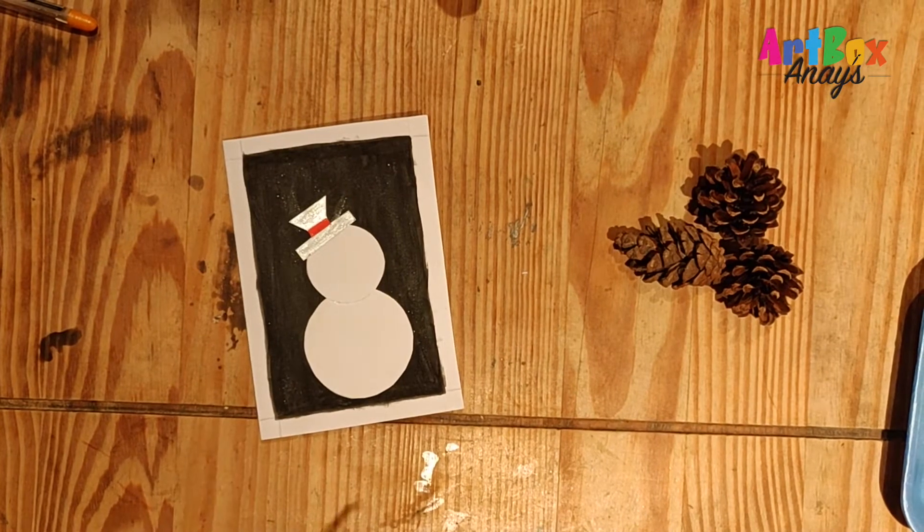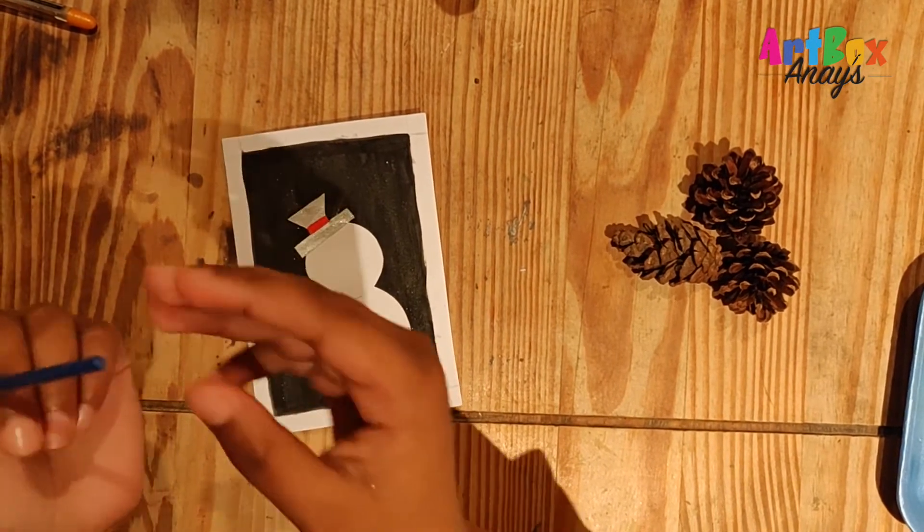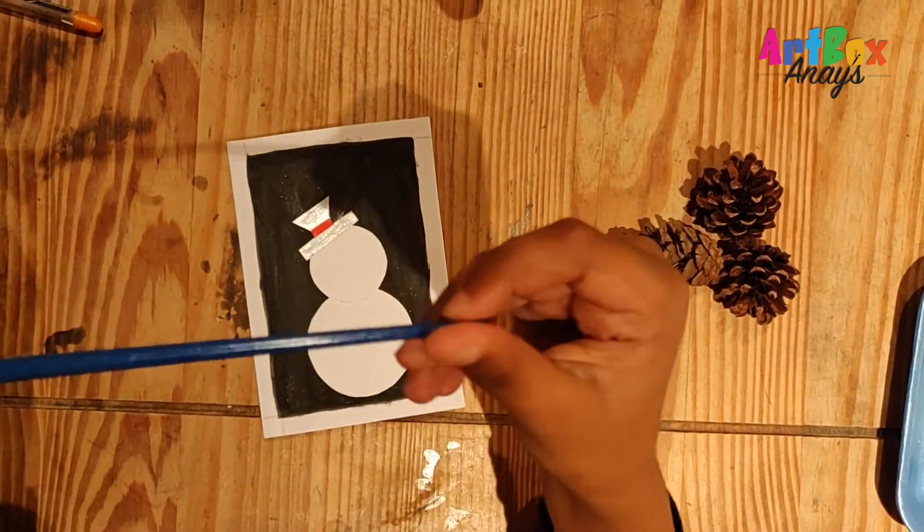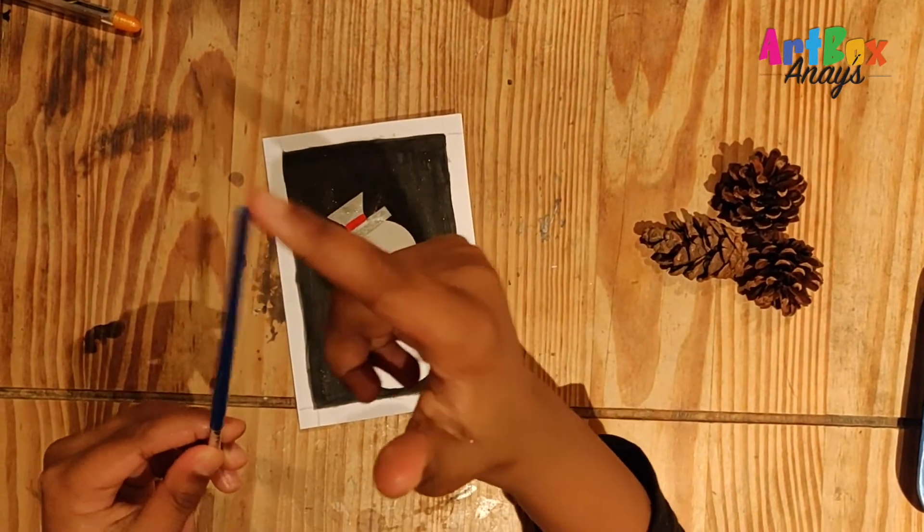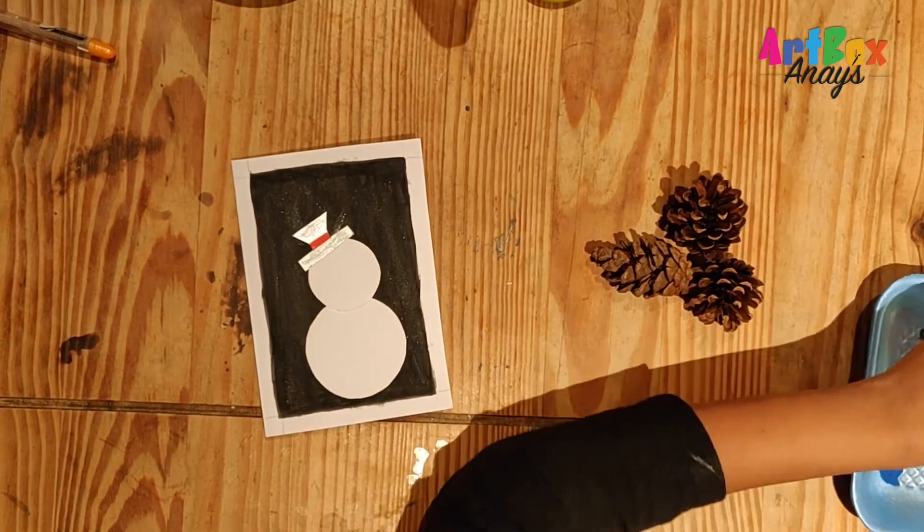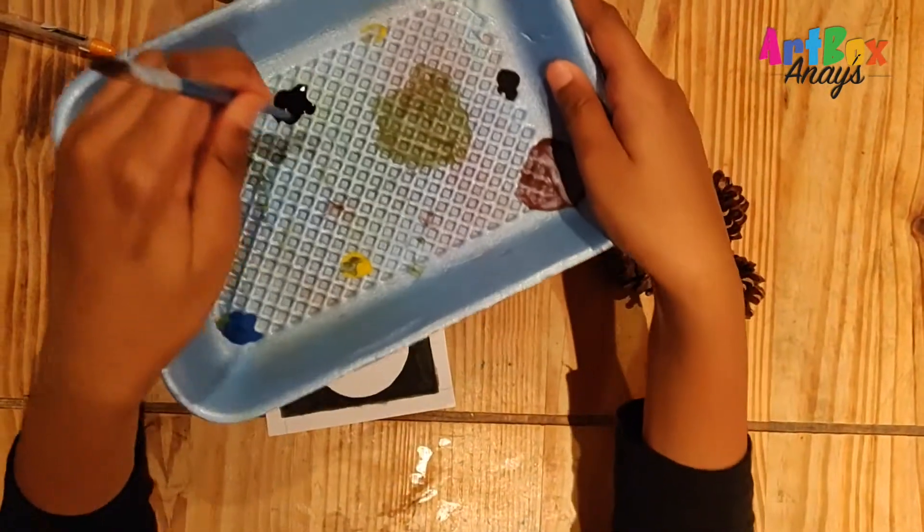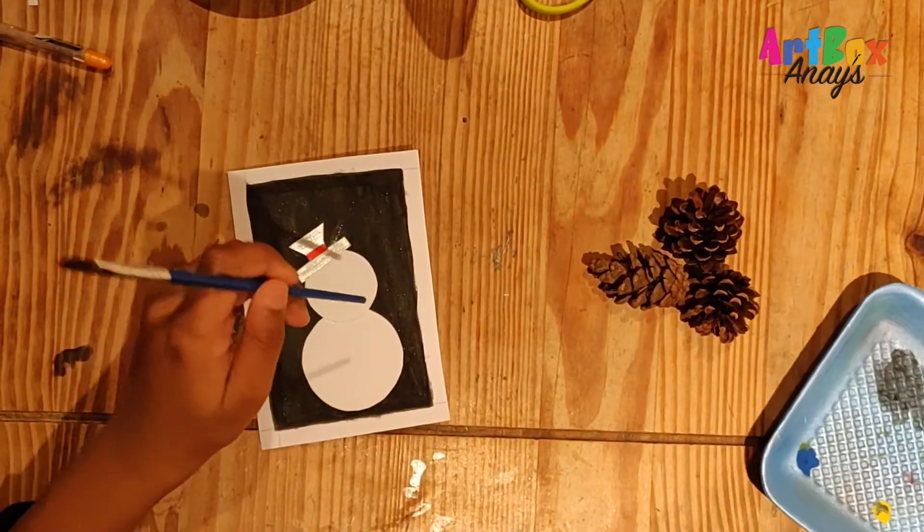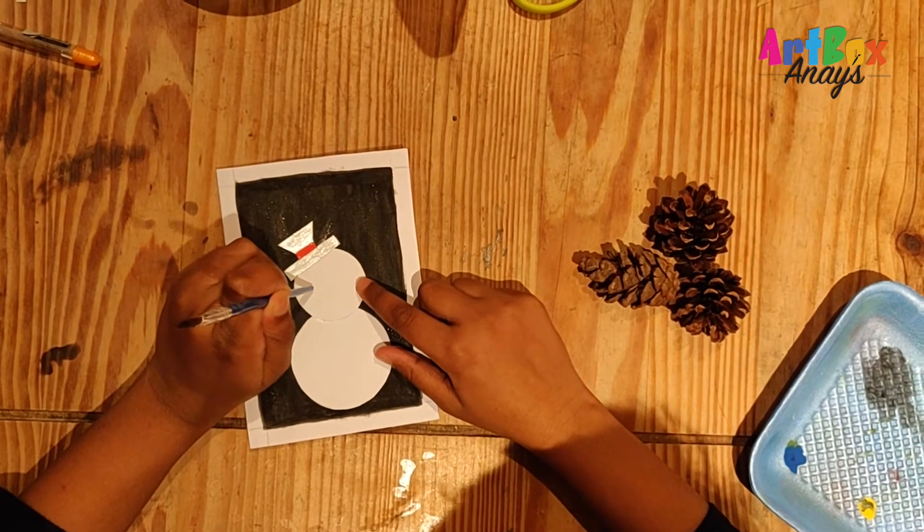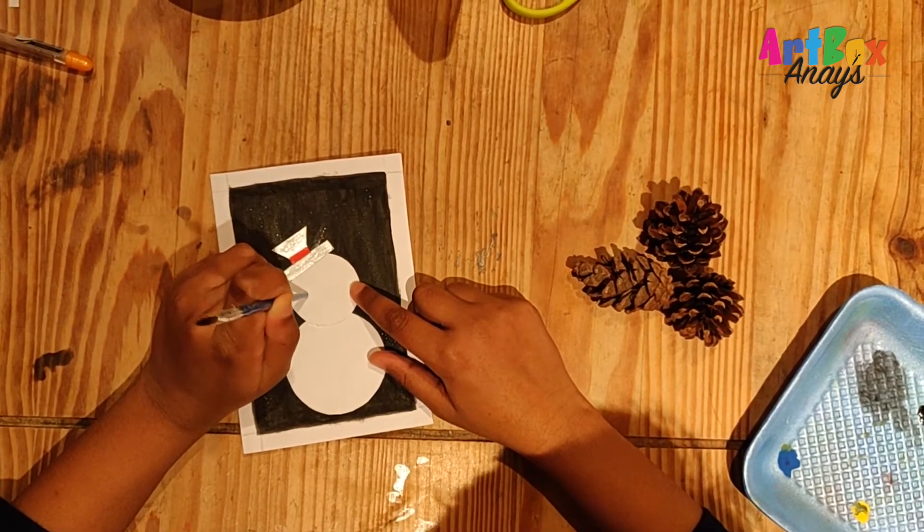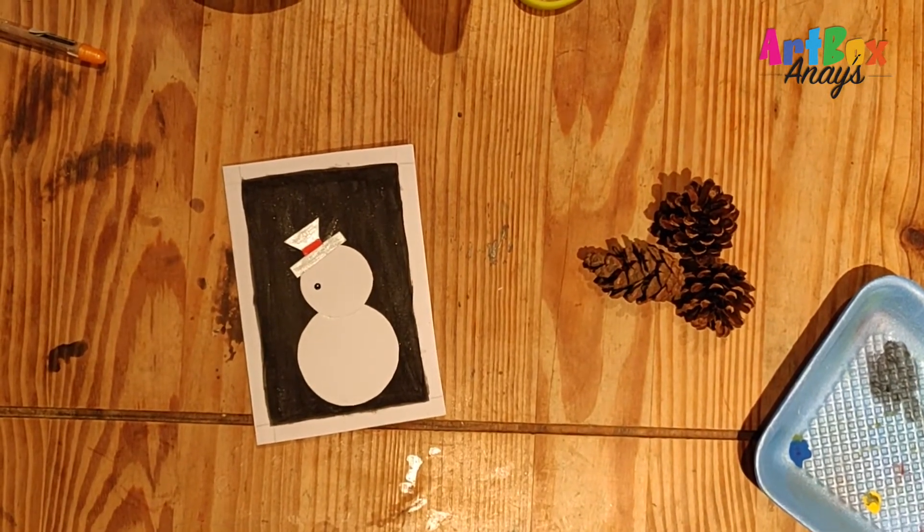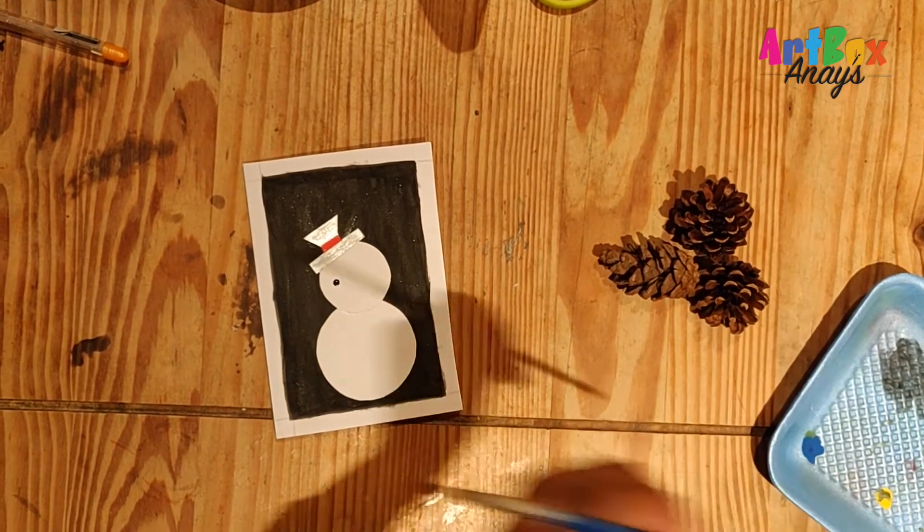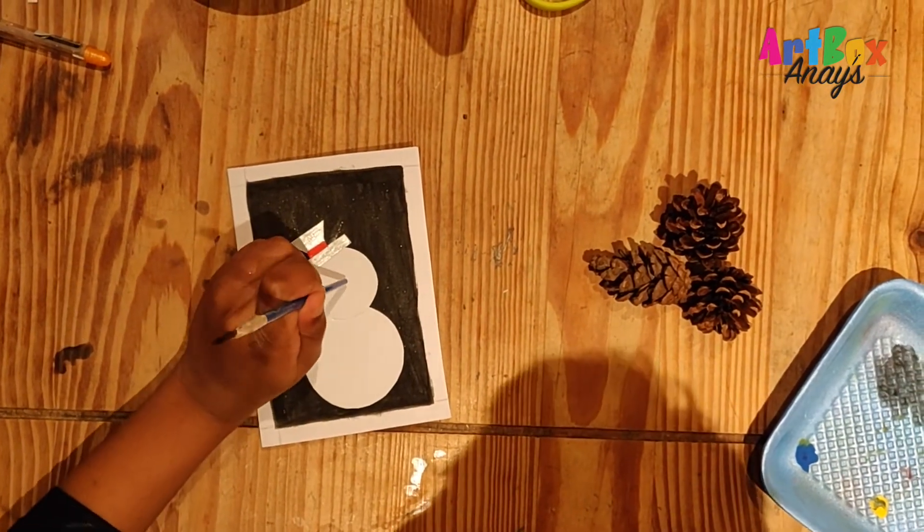Now we are going to draw our eyes. For that we are going to take our paintbrush, we are going to use the color, the end of it. I'm just going to put it in my black color like this, then just put it on there.